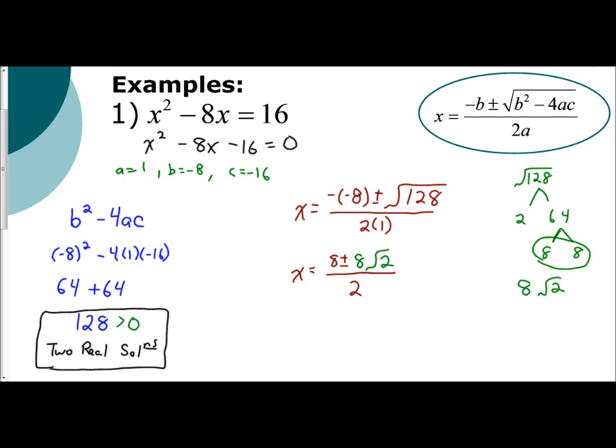And so that is what my simplified radical is. And now we simplify further. I would divide both numbers by 2 and I get x equals 4 plus or minus 4 radical 2. And that's your answer.